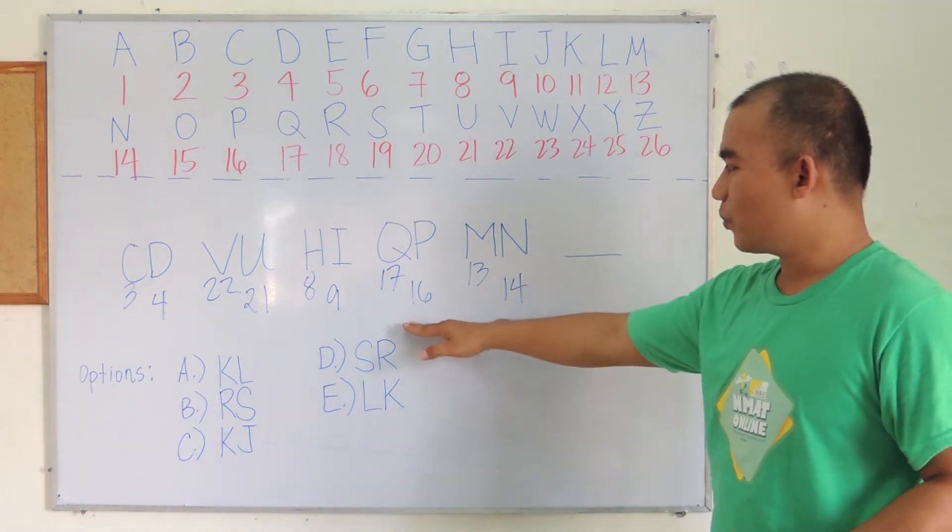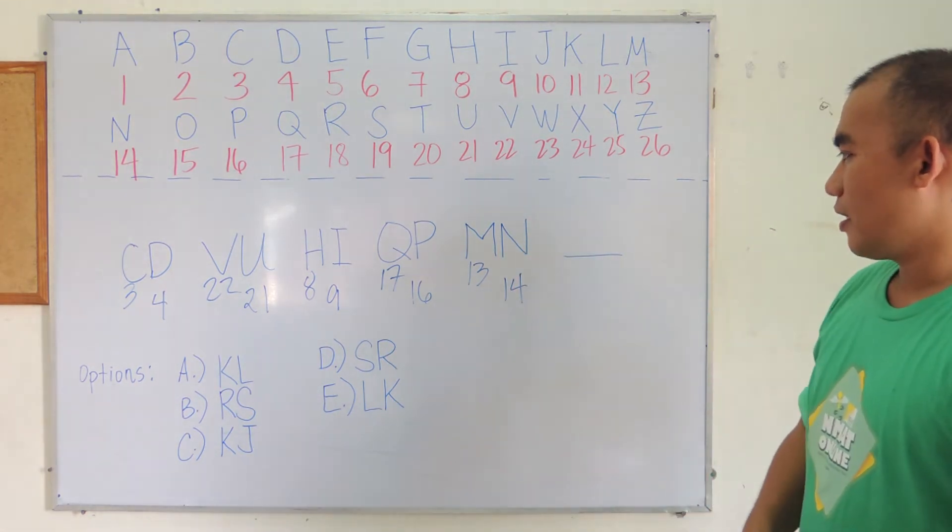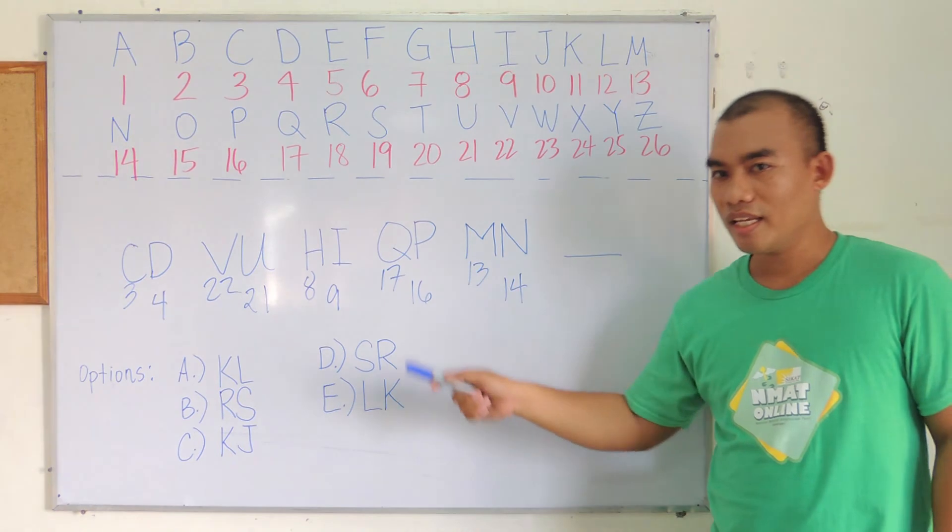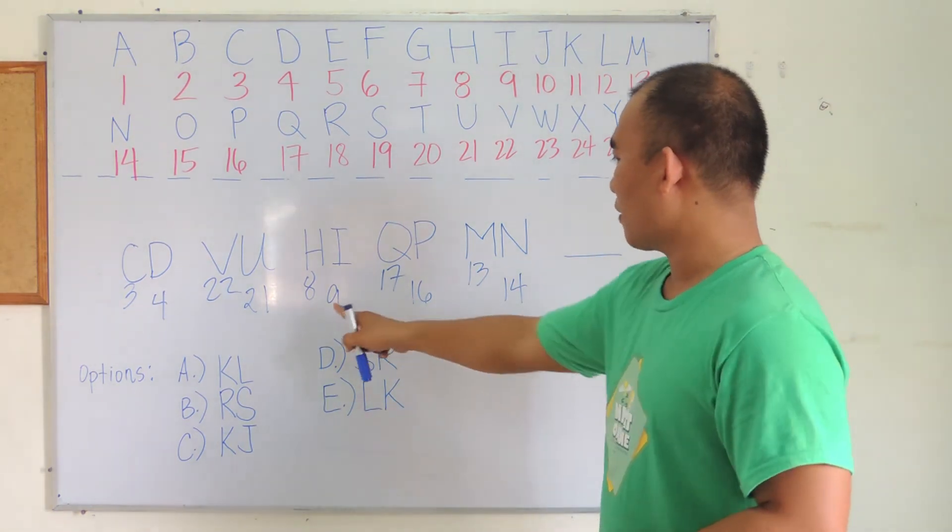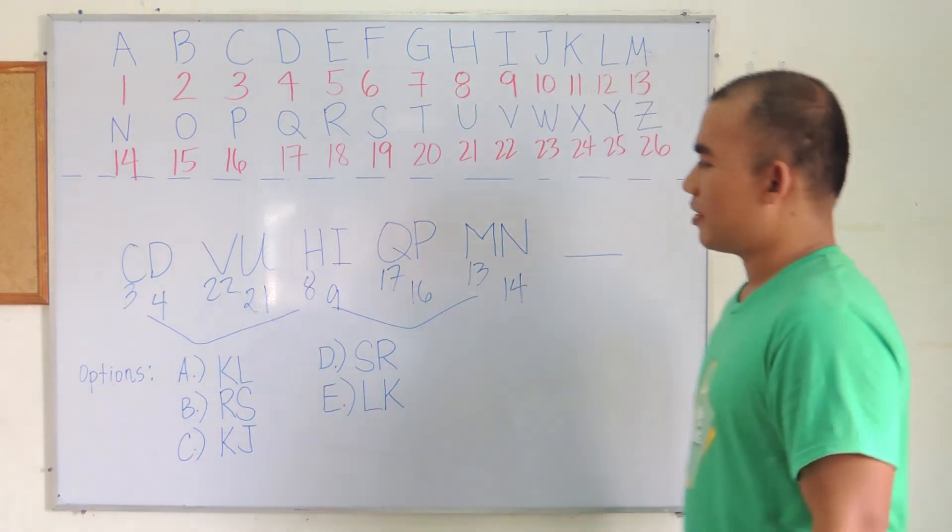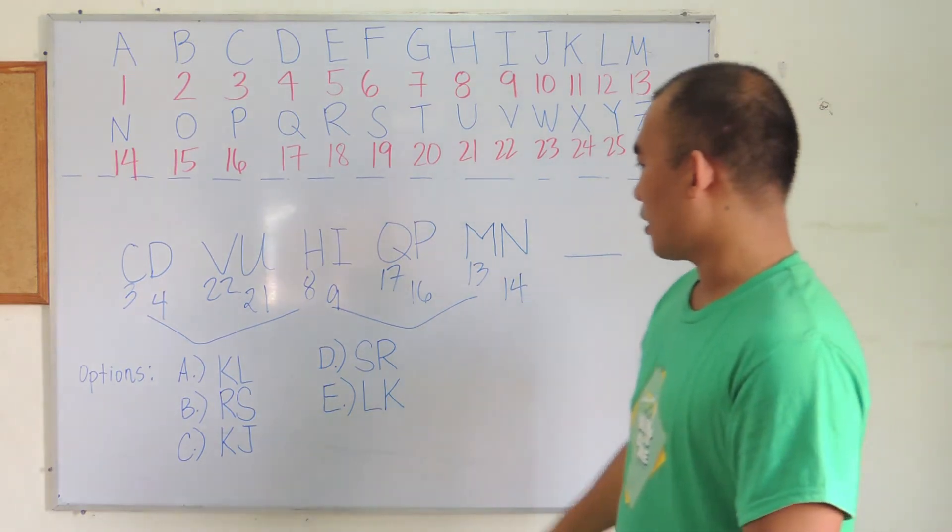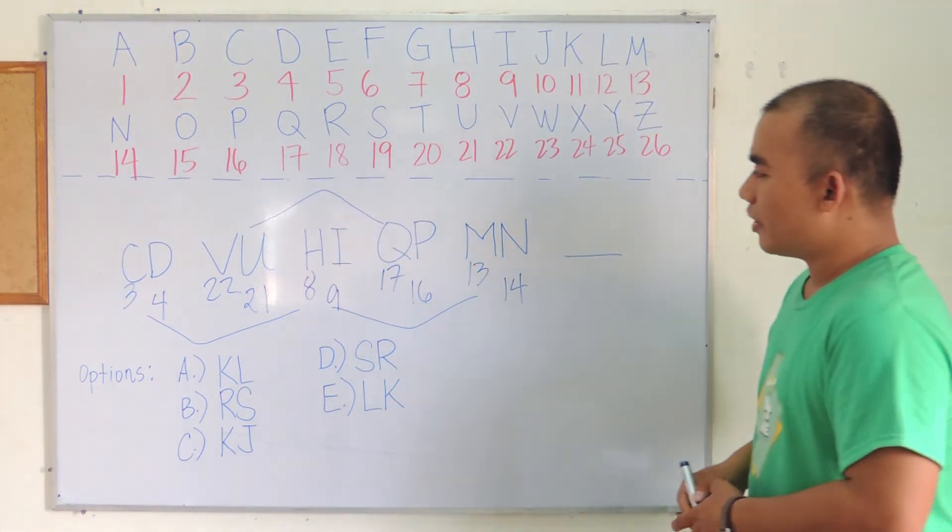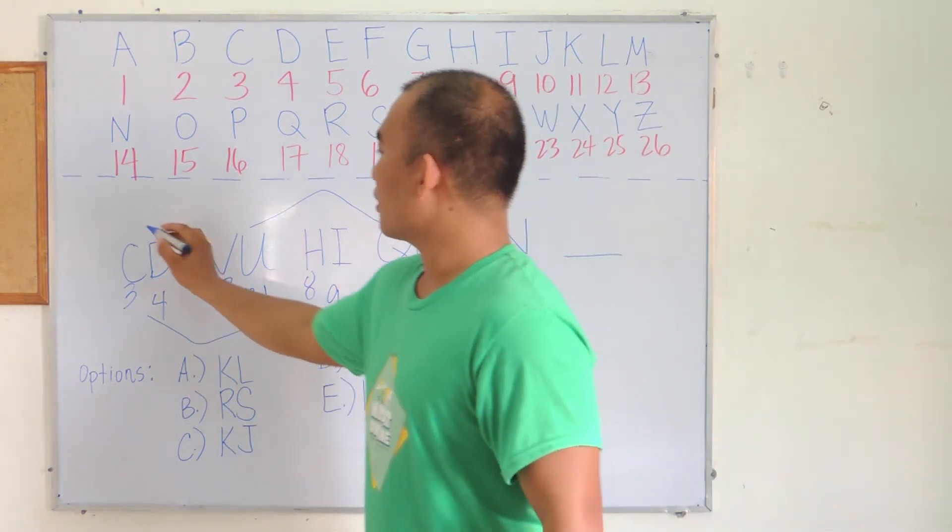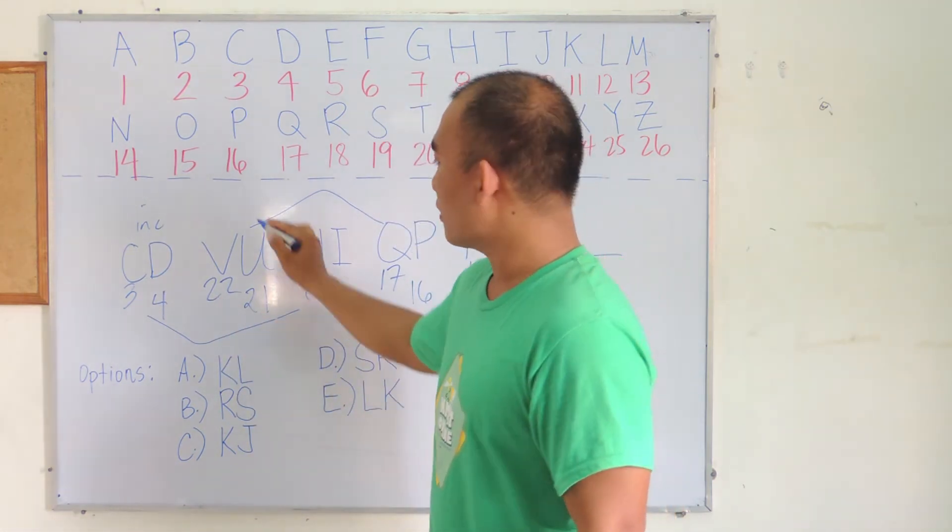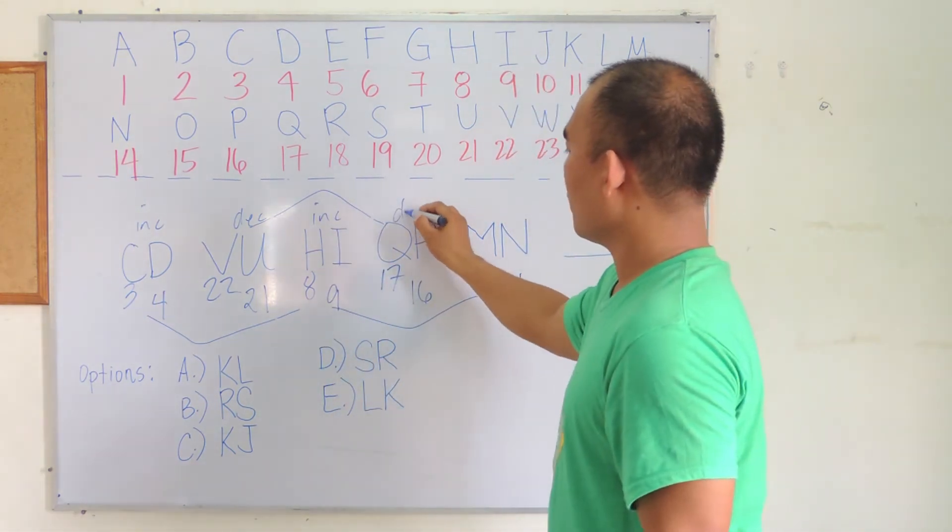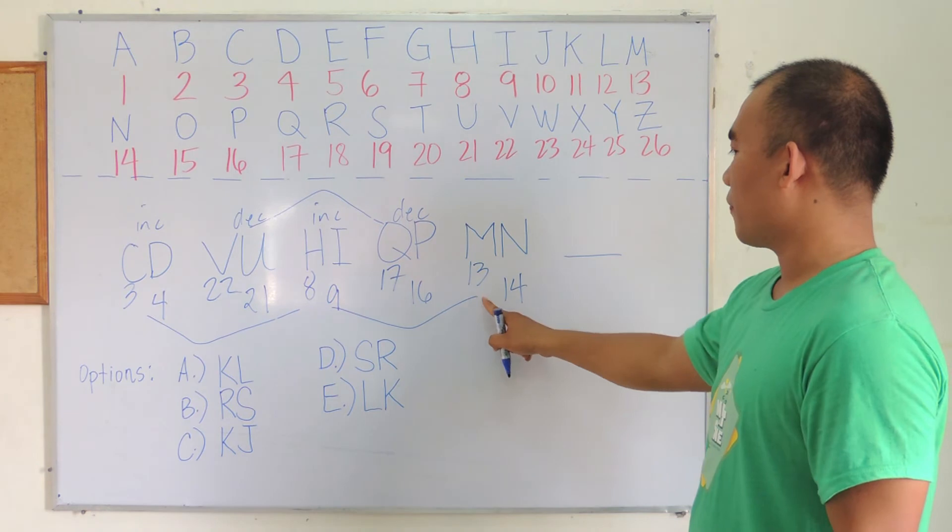From a letter series converted to a number series, the numbers are actually alternating. We have increase, decrease, increase, decrease. So from the first to the third, third to the fifth. Observe that the numbers, we have 3 to 4, that's increasing. 22 to 21, that's decreasing. Then 8 to 9, again increasing, then decreasing. That's a pattern, an alternate pattern. We have 13 to 14, it's increasing.